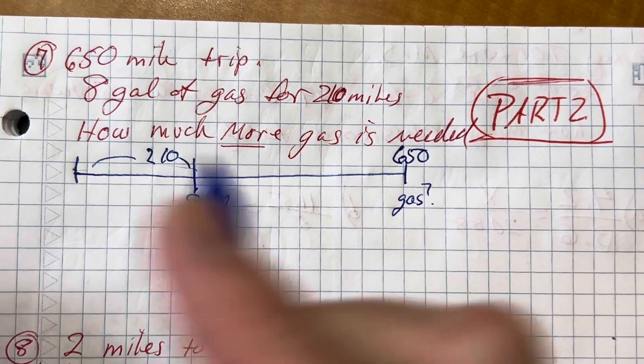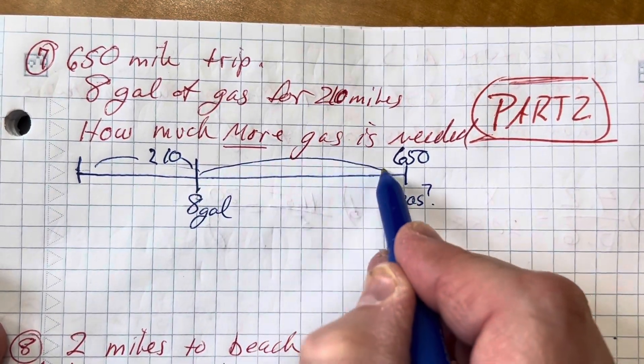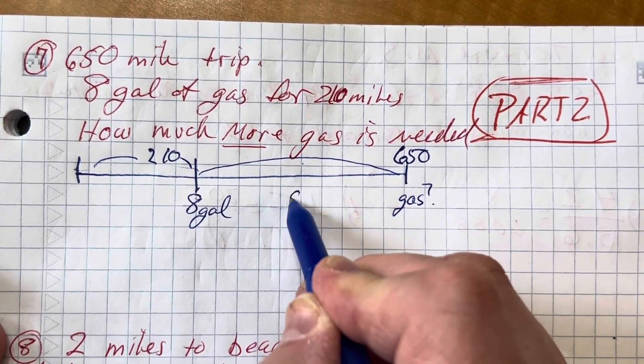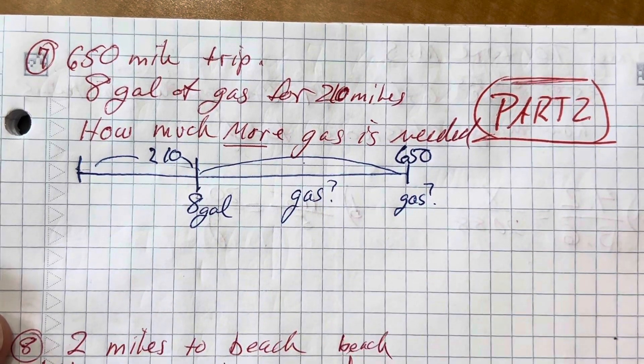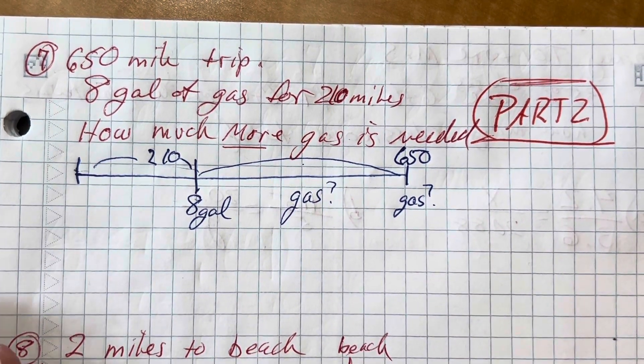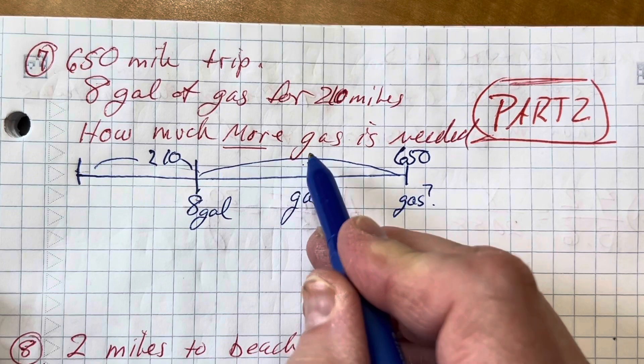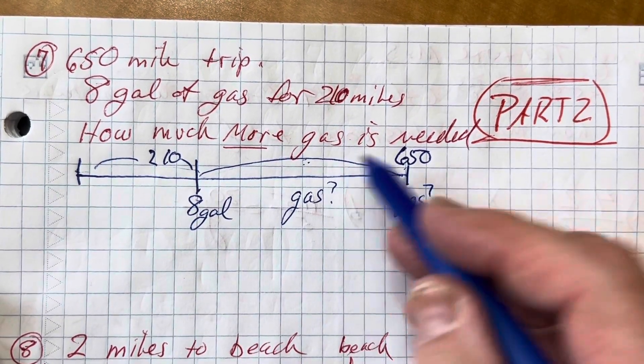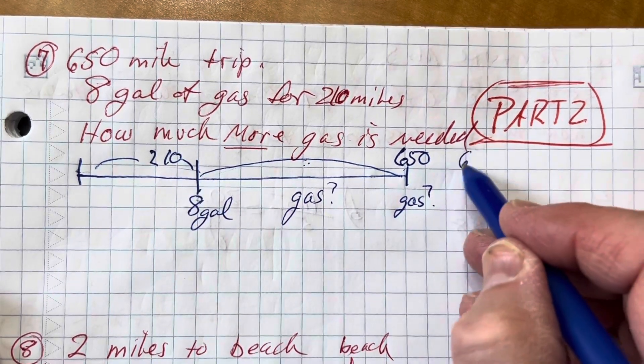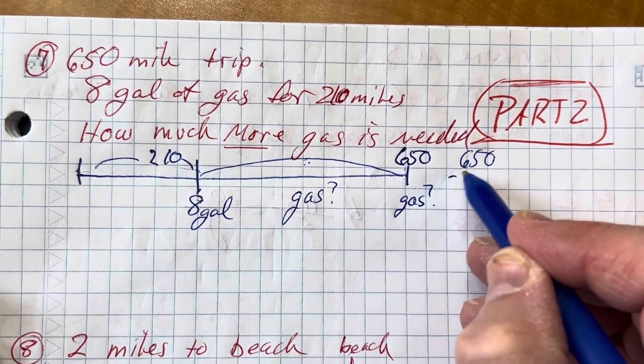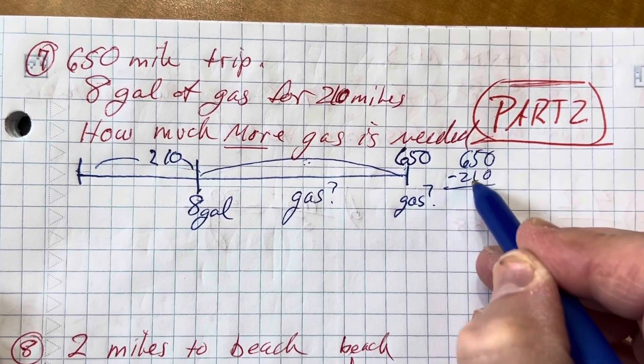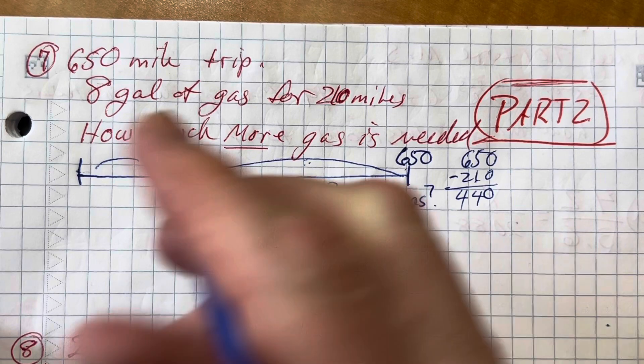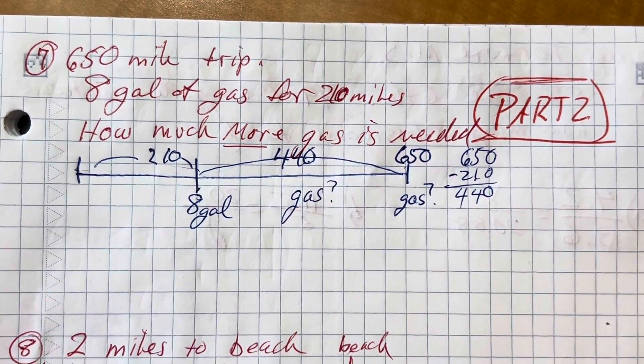The question is, I have this many miles to go and I need to know how much gas to use. That's the question. How much more gas is needed? Do I know the number that's here? Because that's the one I'm looking for. I know that 650 minus 210, I just want to make sure I do this right. That's 440 miles. 440 miles to go.